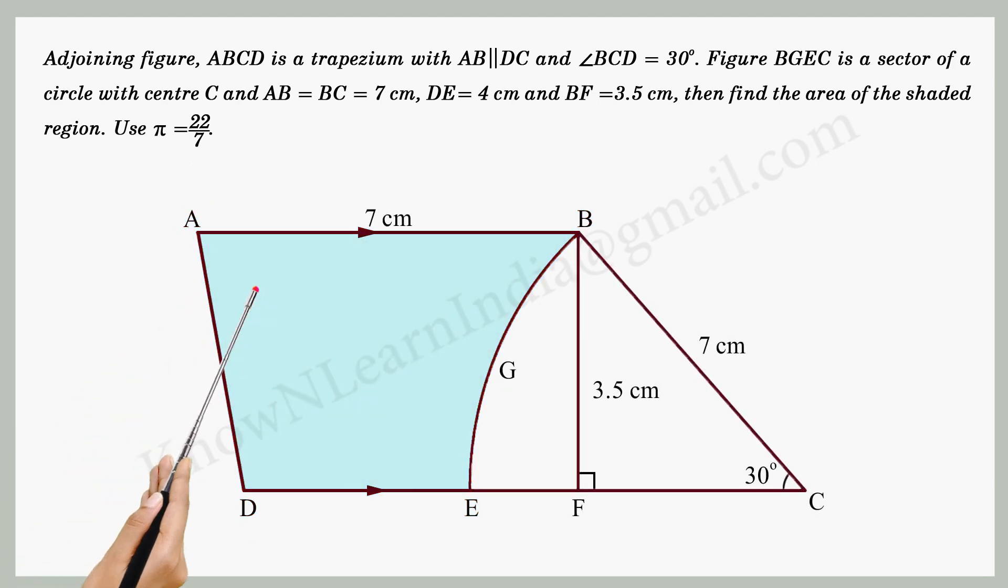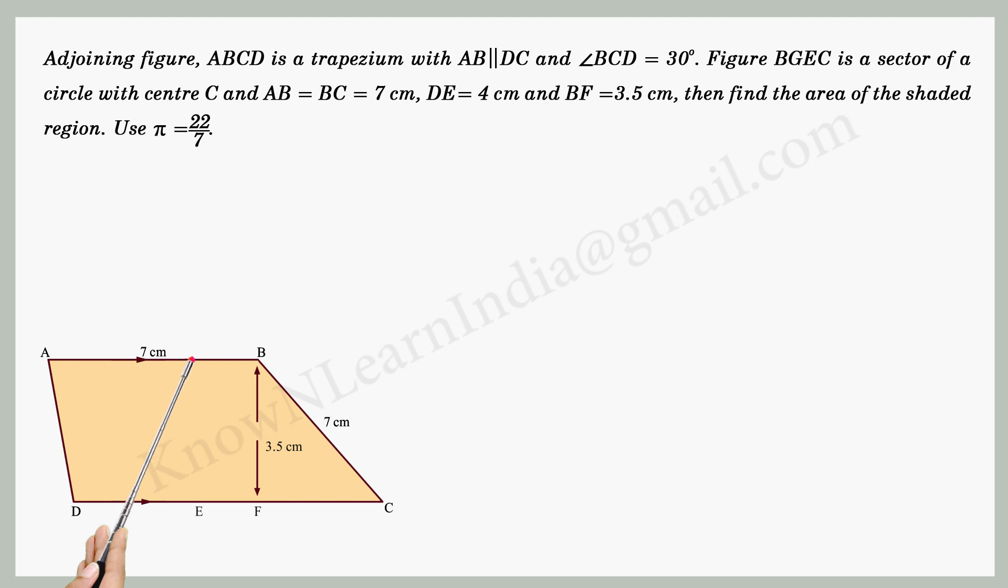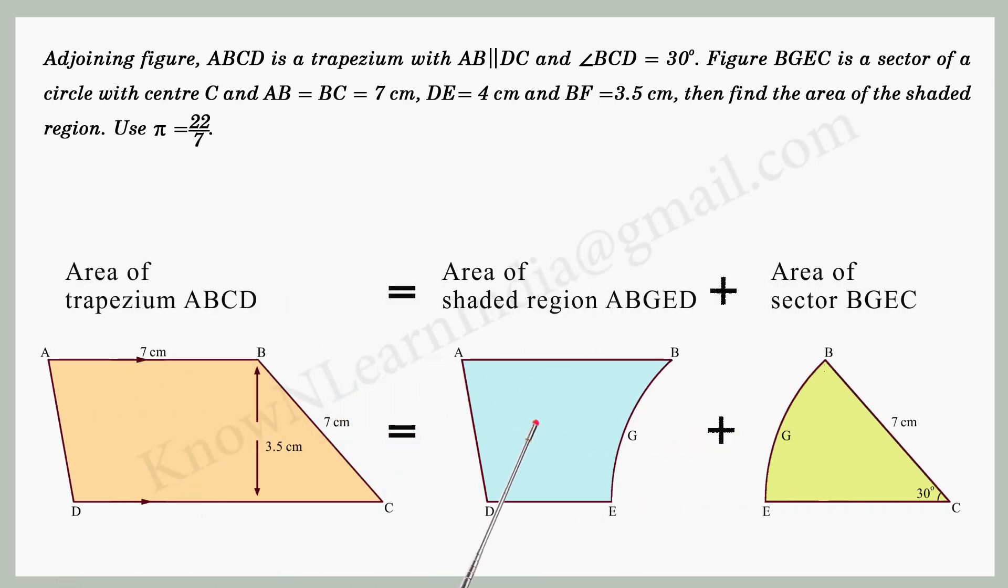How can we get the area of the shaded region ABGED? Let's find out. As per the question, the area of trapezium ABCD is the sum of the area of shaded region ABGED and the area of sector BGEC.